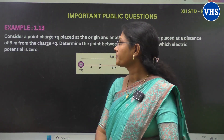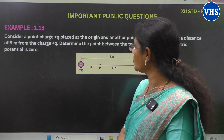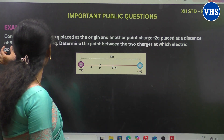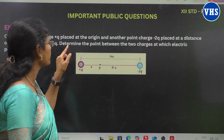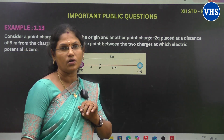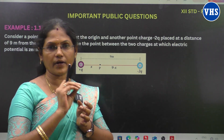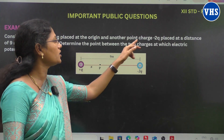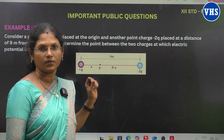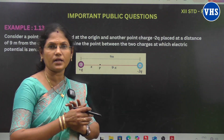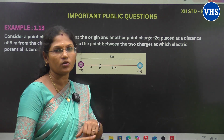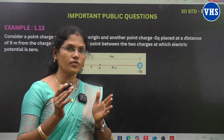Now the second important problem: Consider a point charge plus Q placed at the origin and another point charge minus 2Q placed at a distance of 9 meters from the charge plus Q. Determine the point between the two charges at which the electric potential is zero. First, understand the question — we need to find that specific point between the two charges. The formula we will use is for electric potential.